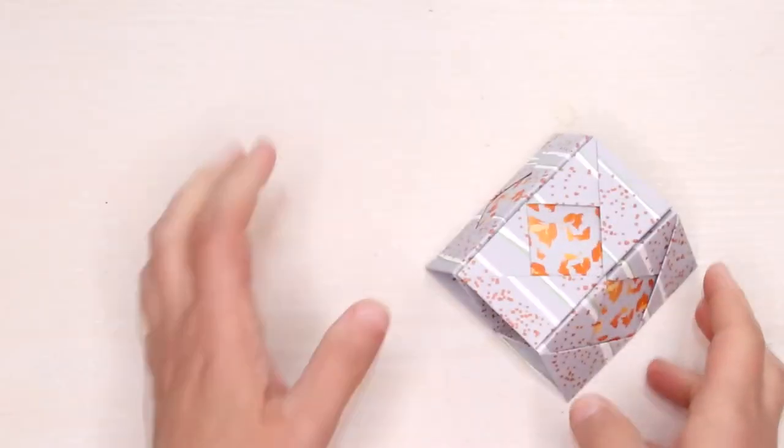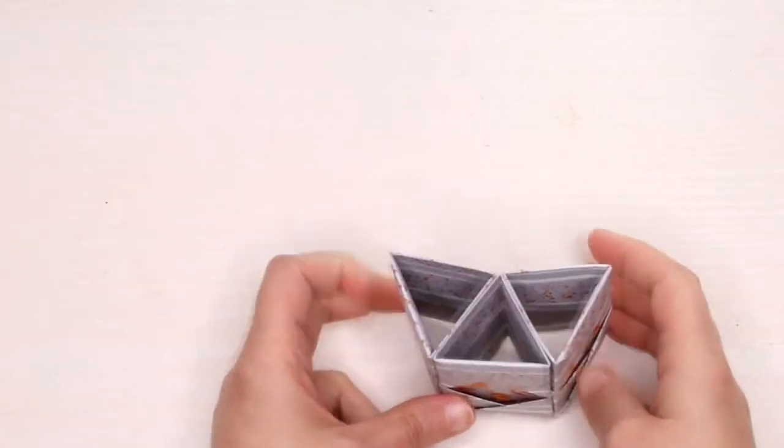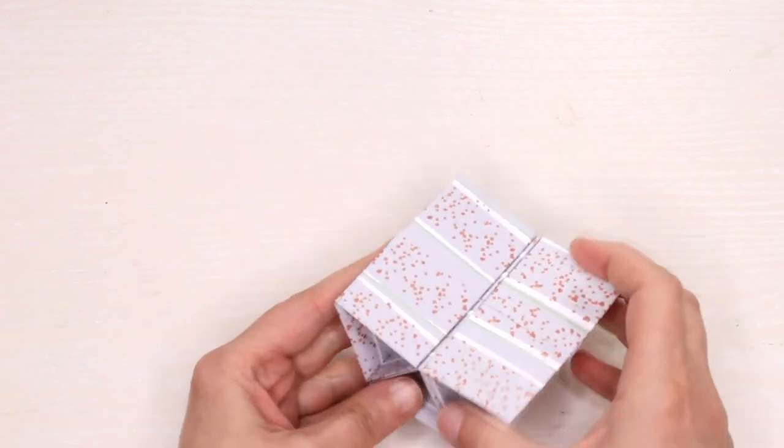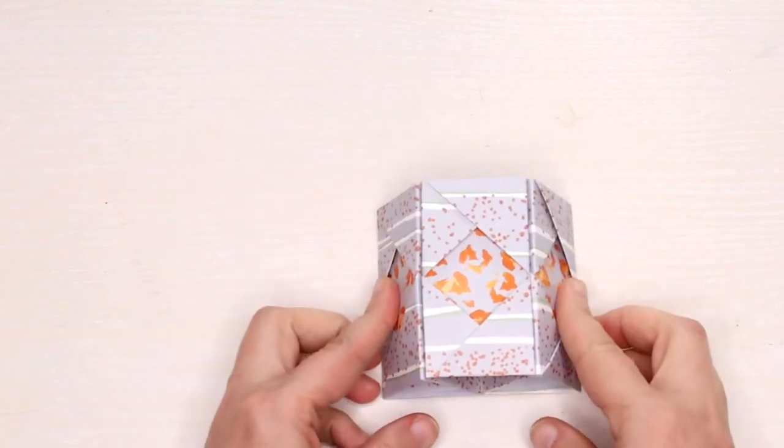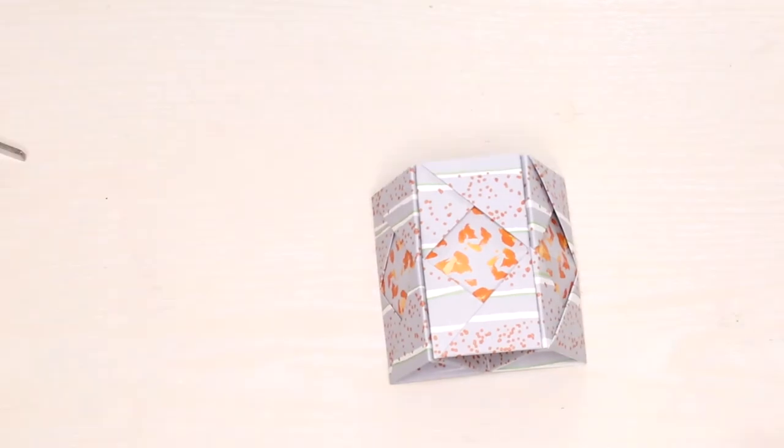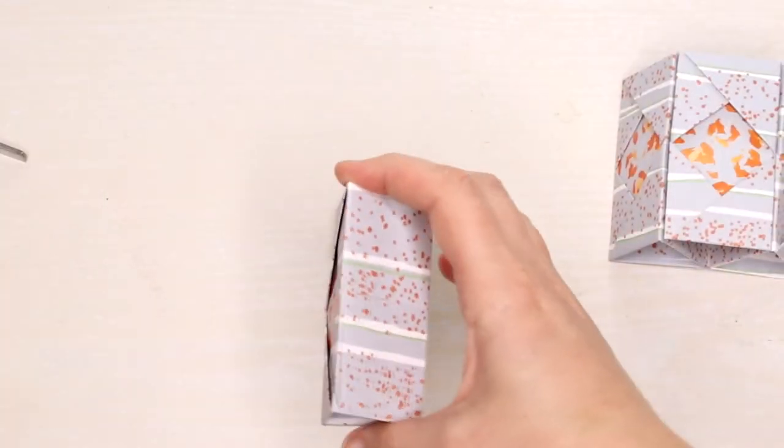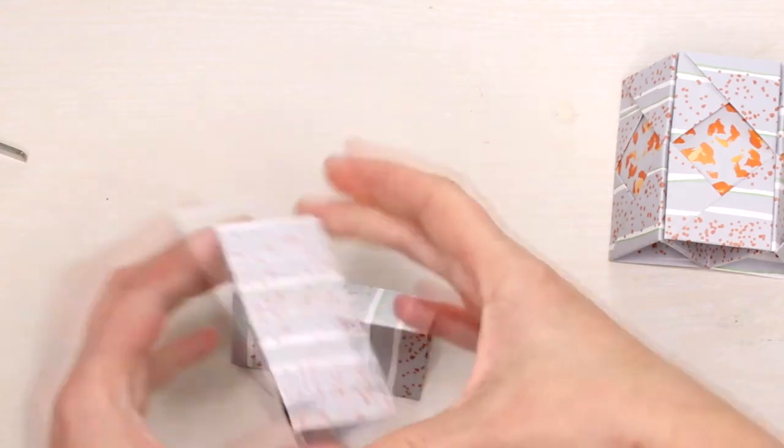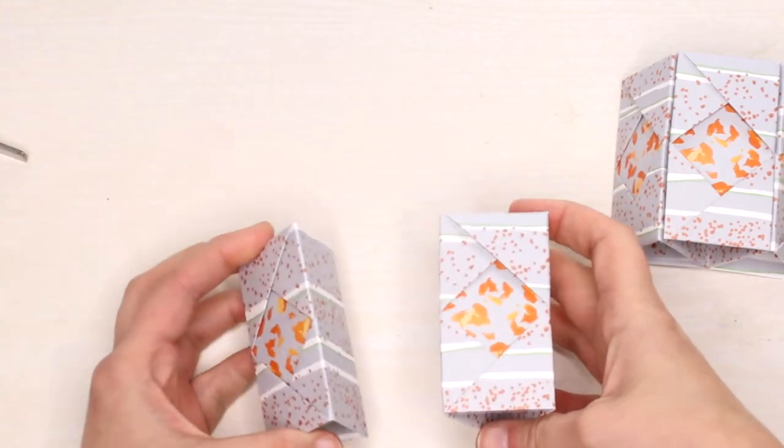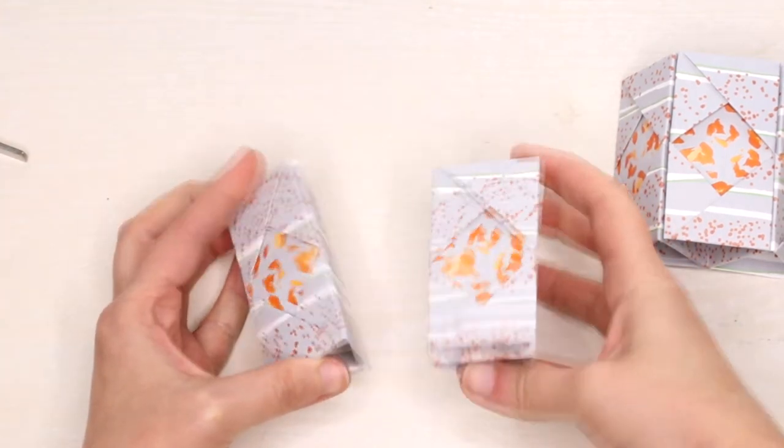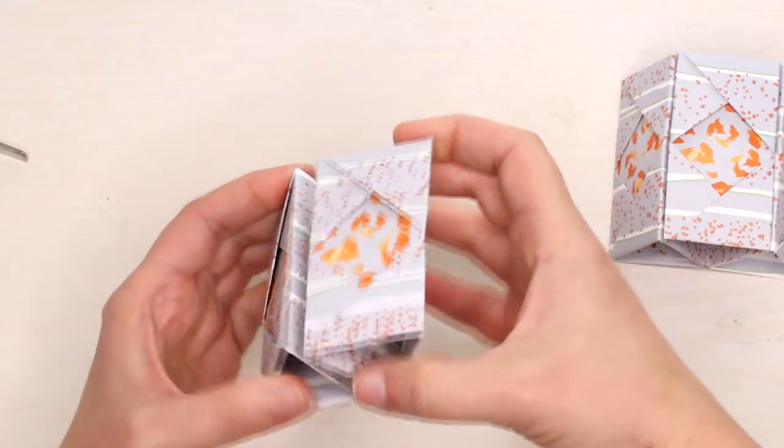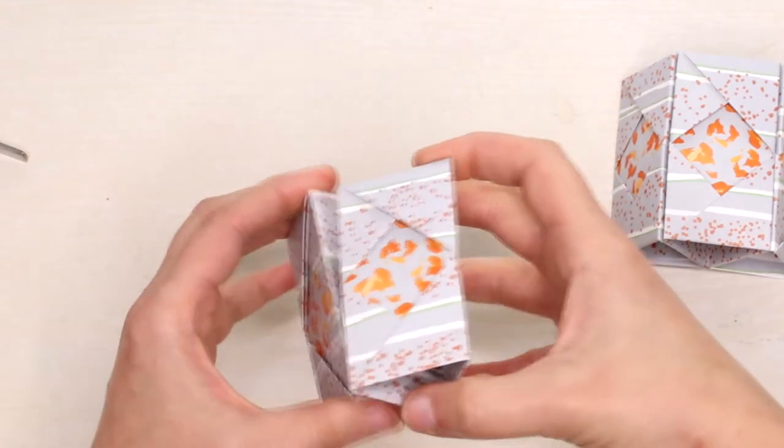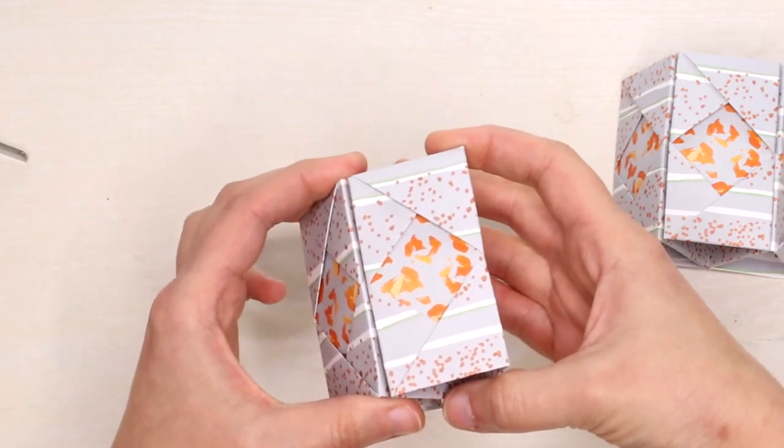Then you start gluing them together. So take two elements, add some glue or strong double sided tape, and glue them together.